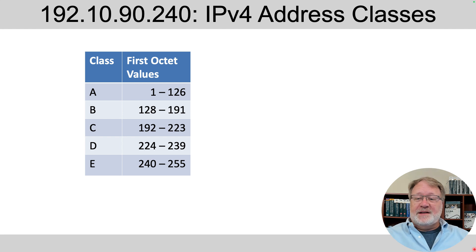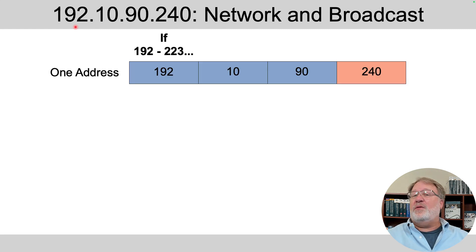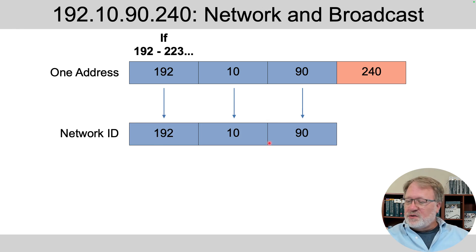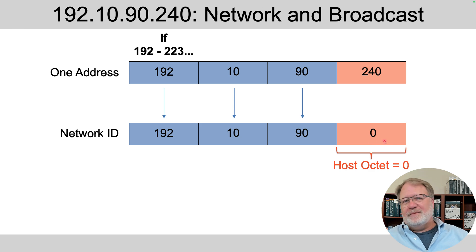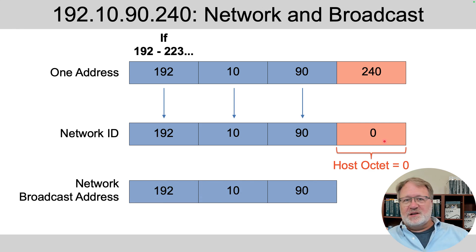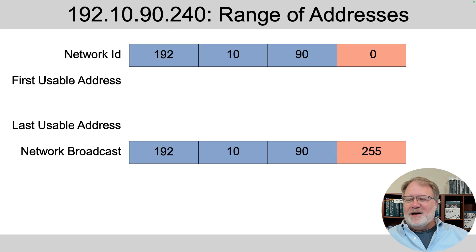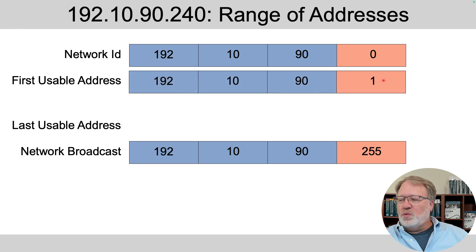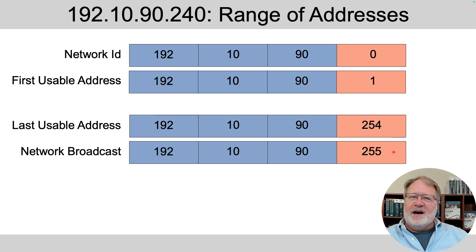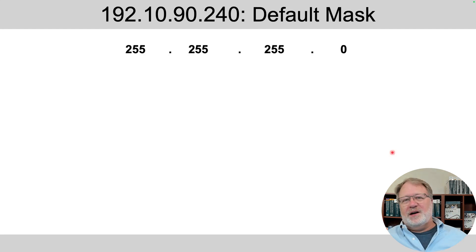Problem four: the address begins with 192, putting us in the class C range, which means three network octets and one host octet. The network ID is the same as the address in the first three octets but with a zero in the host octet. The network broadcast address similarly matches the first three octets with a 255 in that host octet on the far right. The first usable address is the network ID plus one in the fourth octet; the last usable is the broadcast address minus one in the fourth octet. The default mask for class C is three 255s and a zero.